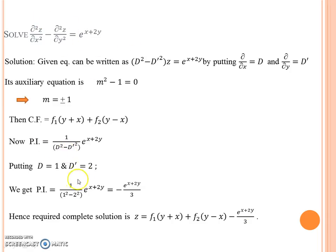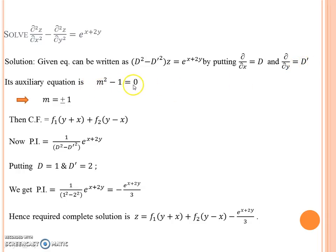The complete solution is z equal to CF plus PI. First we find the CF by finding the auxiliary equation. We arrange the given equation in symbolic form by putting ∂/∂x equal to D and ∂/∂y equal to D'. We get the auxiliary equation m² − 1 = 0. The roots are m = ±1, which are real and distinct. Therefore CF is f₁(y + x) + f₂(y − x).